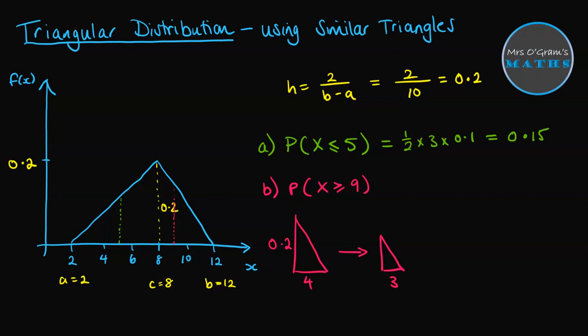So to get from 4 down to 3, we multiply it by 3 divided by 4. So we're timesing by 0.75 as our scale factor here. If we do 0.75 times 0.2, it will give us the height of that smaller triangle. 0.2 times 0.75 comes to 0.15. This is now the height here is 0.15. So our area of this triangle here will give us the probability we're looking for. So it's half times the base times the height. So that probability comes to 0.225.